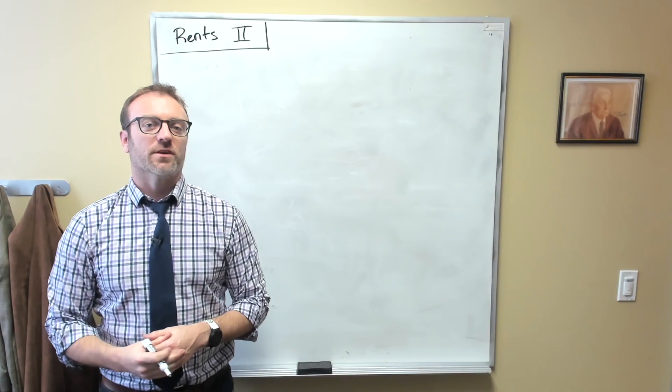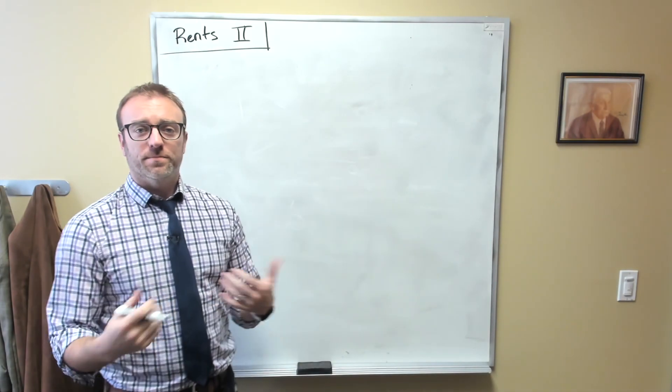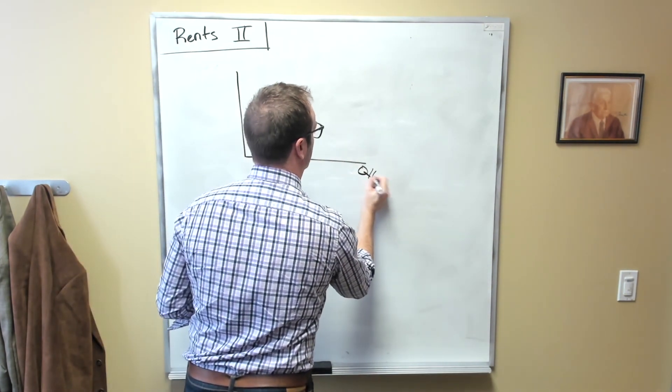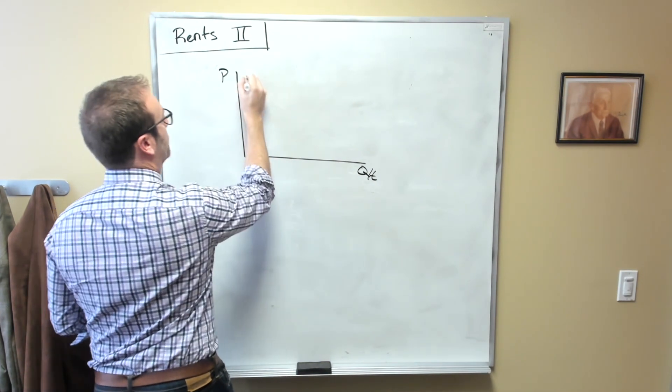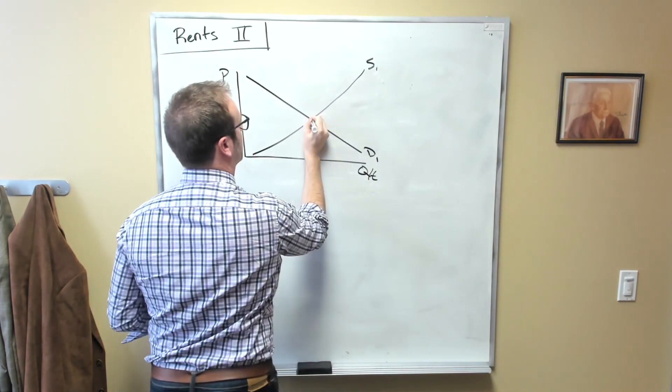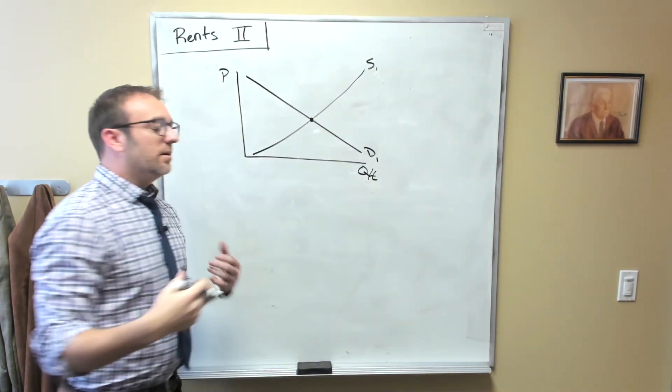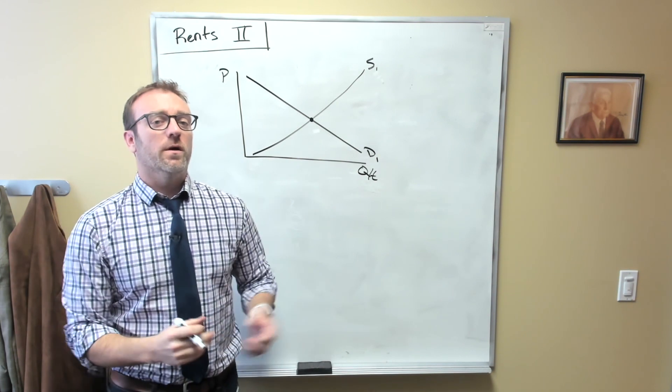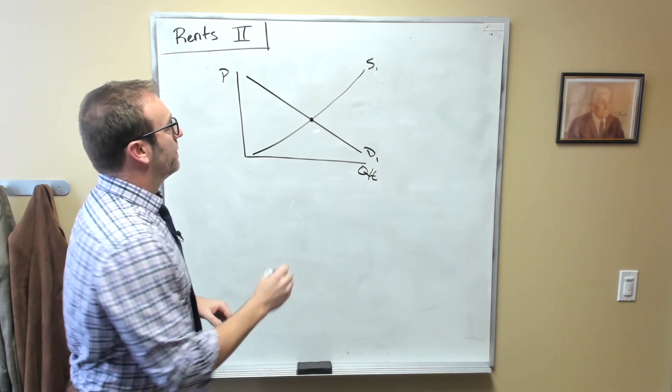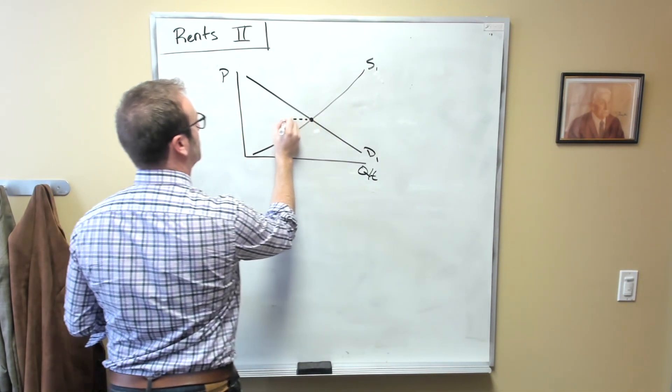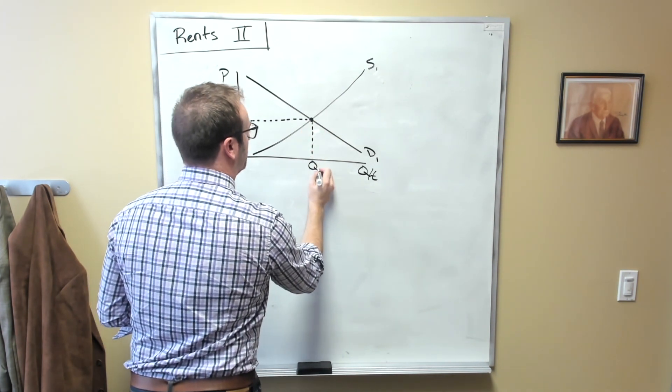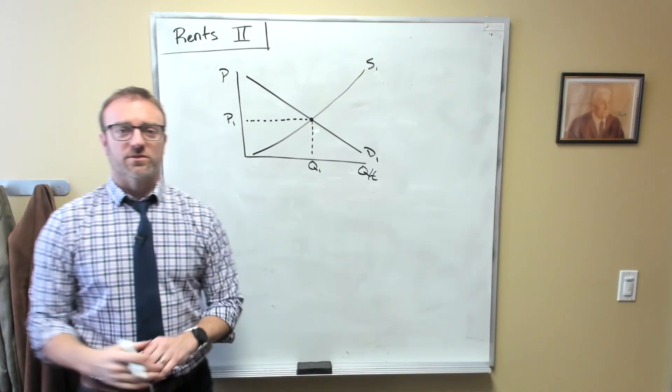So, where are these rents actually located on a standard supply and demand graph? Okay, so let's just draw a quick hypothetical market down here. We have our downward sloping market demand curve, our upward sloping market supply curve. And in a market where there are no barriers to entry, and everyone is free to enter the market whenever they so choose, price will be bid into this equilibrium point right here. We'll call this P1. And there will be Q1 units of this good provided.